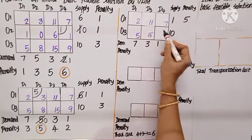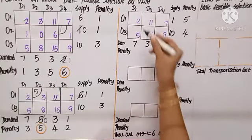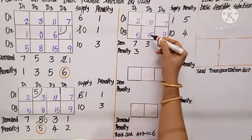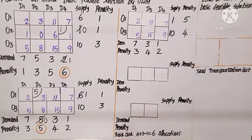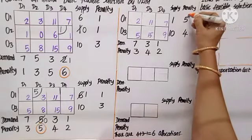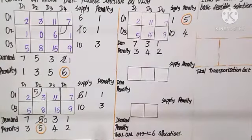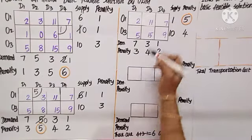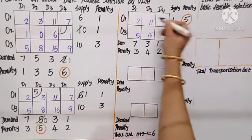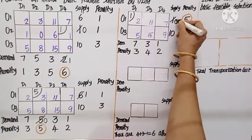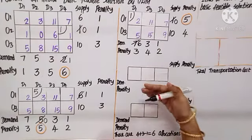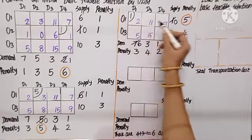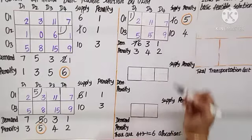Calculating the new penalties: O1 row: 7 minus 2 is 5. O3 row: 9 minus 5 is 4. Column-wise for D1: 5 minus 2 is 3. D3: 15 minus 11 is 4. D4: 9 minus 7 is 2. Out of all these, the highest is 5. So we choose O1 row. In O1, the minimum cost is 2. Supply is 1 and demand is 7, so we allocate 1. This becomes 0, and demand becomes 7 minus 1, which is 6. We eliminate O1.